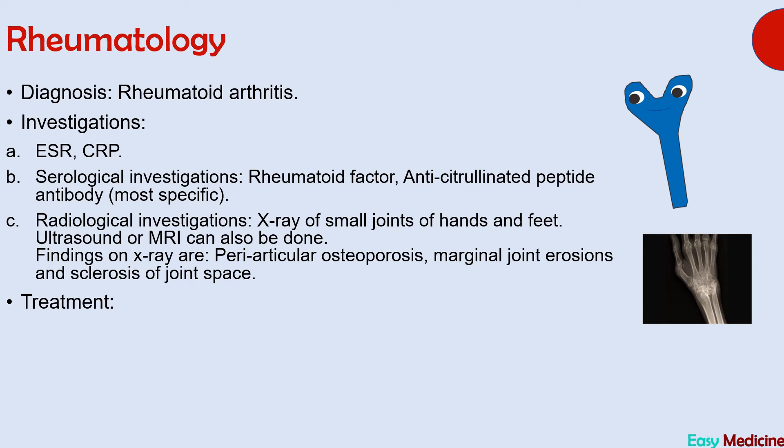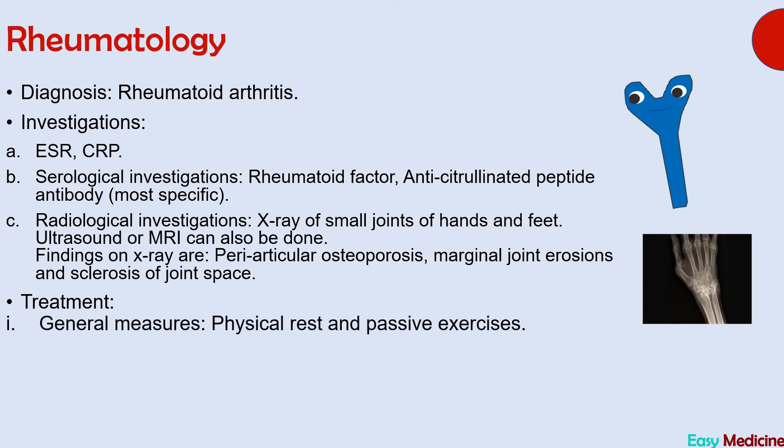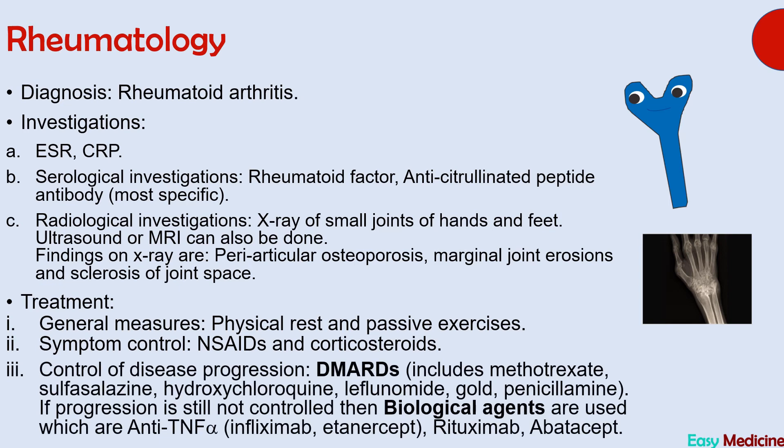Treatment of rheumatoid arthritis involves general measures (physical rest and passive exercises), symptomatic control with NSAIDs and corticosteroids, and disease progression control with DMARDs — methotrexate, sulfasalazine, hydroxychloroquine, leflunomide, gold, and penicillamine. If progression is not controlled, biological agents are used: anti-TNF alpha drugs including infliximab and etanercept, as well as rituximab and abatacept. DMARDs and biological agents are the mainstay of treatment.